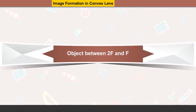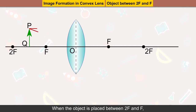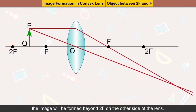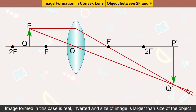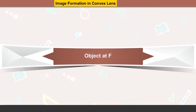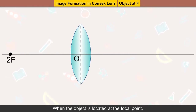Object between 2F and F: when the object is placed between 2F and F, the image will be formed beyond 2F on the other side of the lens. The image formed in this case is real, inverted, and larger than the object.